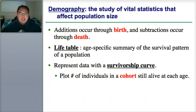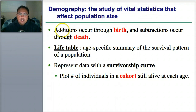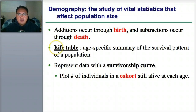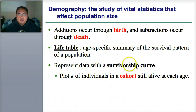Demography is the study of vital statistics that affect population size. Additions come from birth and you subtract through death. One tool we use to organize this is called a life table, which is an age-specific summary of the survival pattern of a population. They use this data with a survivorship curve, and they plot the number of individuals in a cohort still alive at each age.